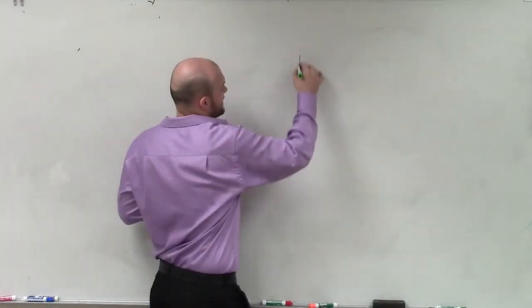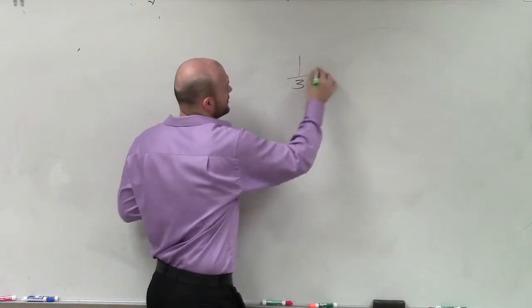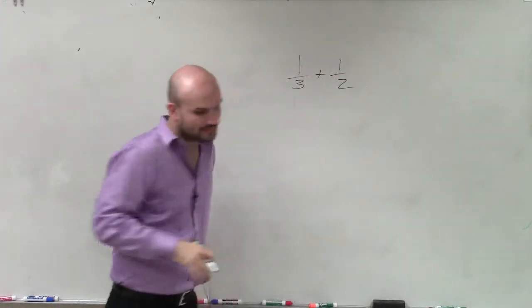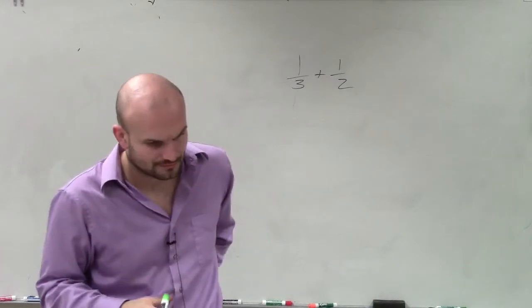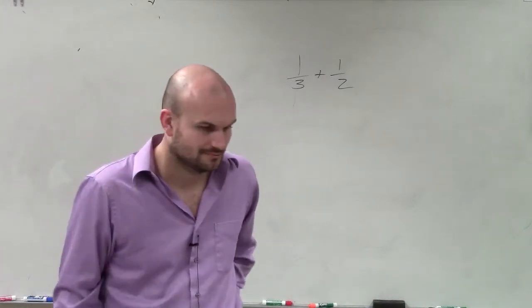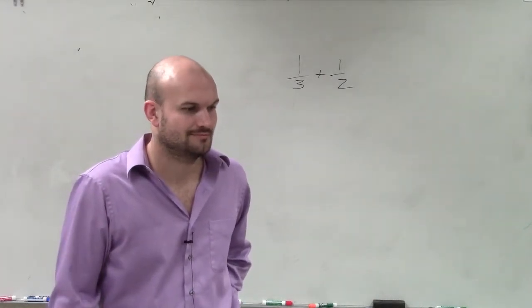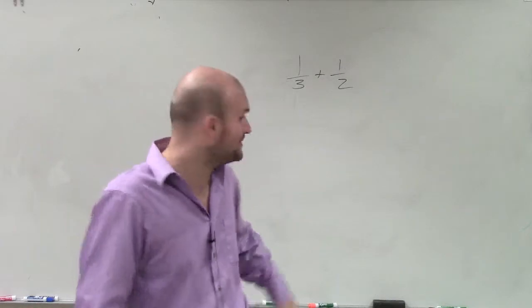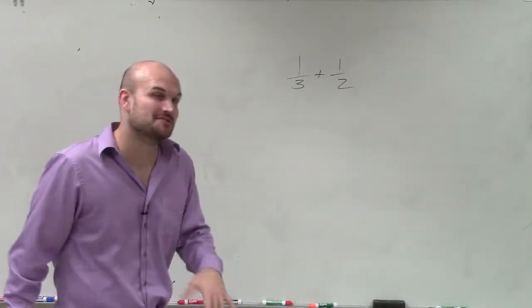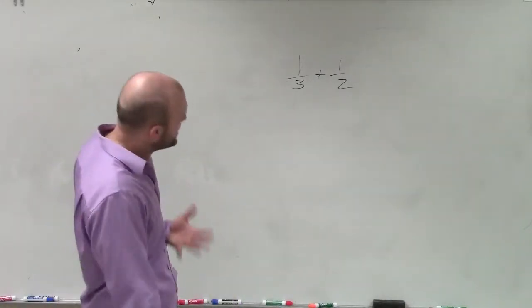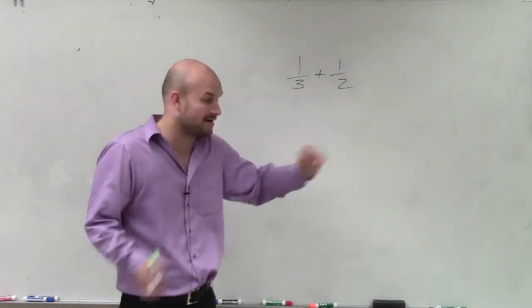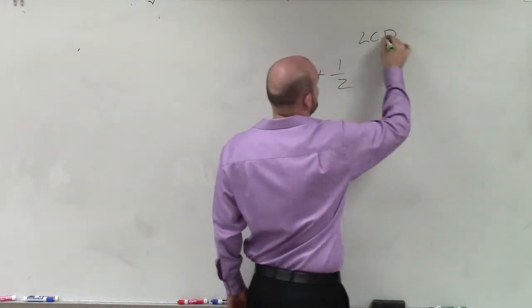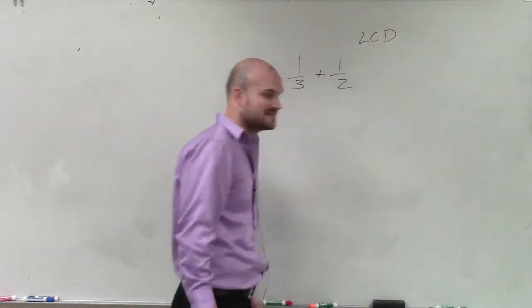For instance, what if I just wanted to add 1 third plus 1 half? To combine these two fractions, I've got to make sure I have the same denominator. So to do that, I need to find out what we call our least common denominator.